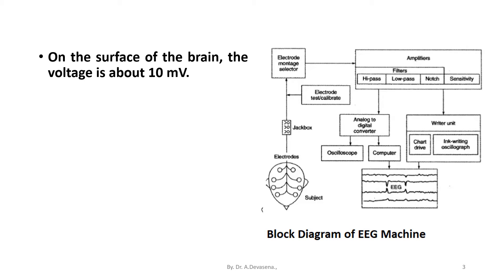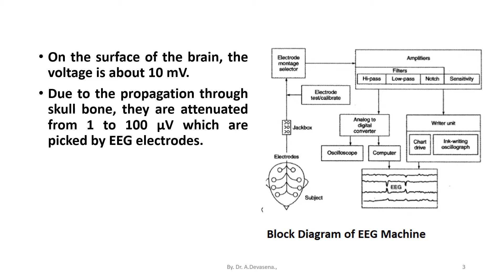Due to the propagation through skull bone, they are attenuated from 1 to 100 microvolts, which are picked up by EEG electrodes. The frequency range is from 0.5 to 3,000 hertz and the resistance range from few thousand ohms to nearly 100 ohms, depending on the electrode used.